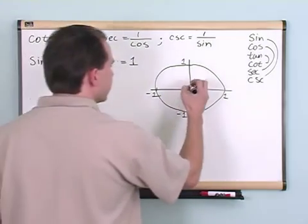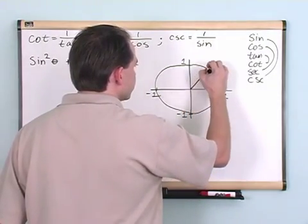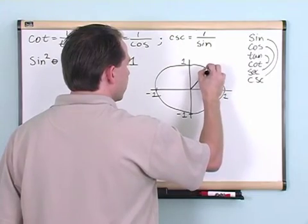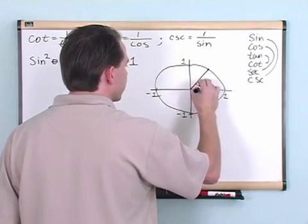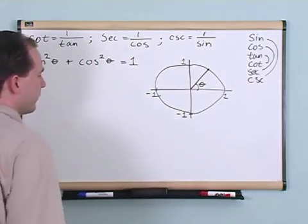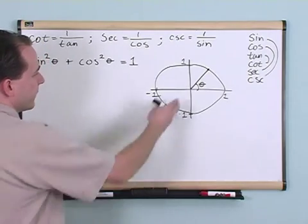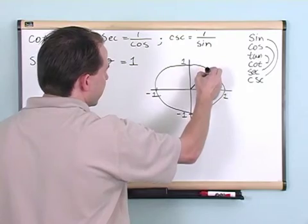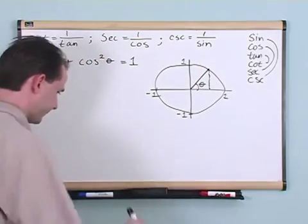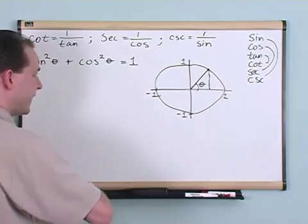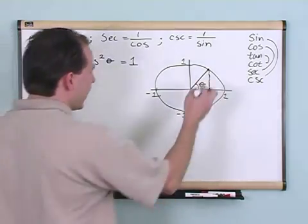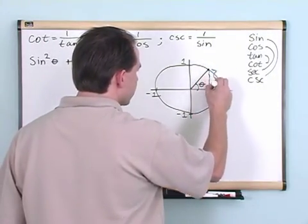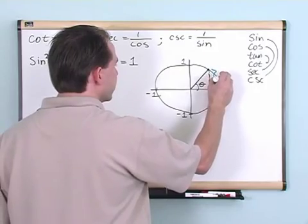If you pick some random angle here, like this, this angle would be theta. That's what we've been talking about. And then if we want to find the sine and cosine of this, we take the projection down here. What we've been saying throughout the entire class is this measure right here is called the sine of theta.